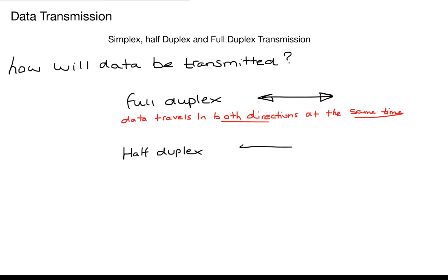In our half duplex transmission, data can travel in both directions but it can only be traveling in one direction at a time.